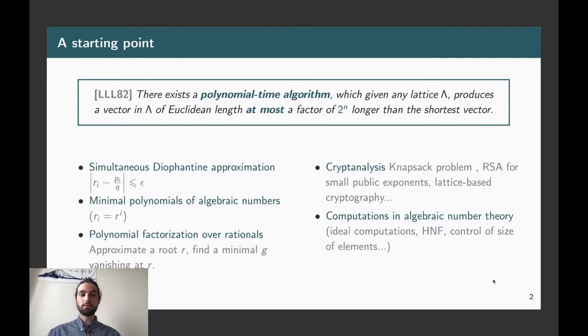This has enabled to solve a lot of problems arising in number theory such as the simultaneous diophantine approximation problem. It also allows to find minimal polynomials of algebraic numbers. In particular, and this was the first application of the LLL algorithm as it was presented by the original paper, it allows to find the factorization of polynomials over rational numbers. And in cryptanalysis, lattice reduction has a huge number of applications.